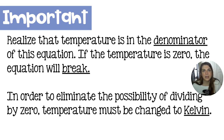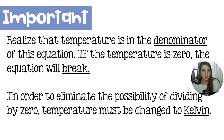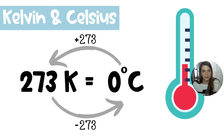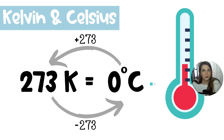Potentially the most important part of the combined gas law is noting that temperature is in the denominator. We don't like to divide by zero — it breaks the equation. So if temperature is zero, the equation breaks. To eliminate that possibility and to avoid negative Celsius temperatures, we switch everything over to Kelvin. You convert from Celsius to Kelvin by adding 273.